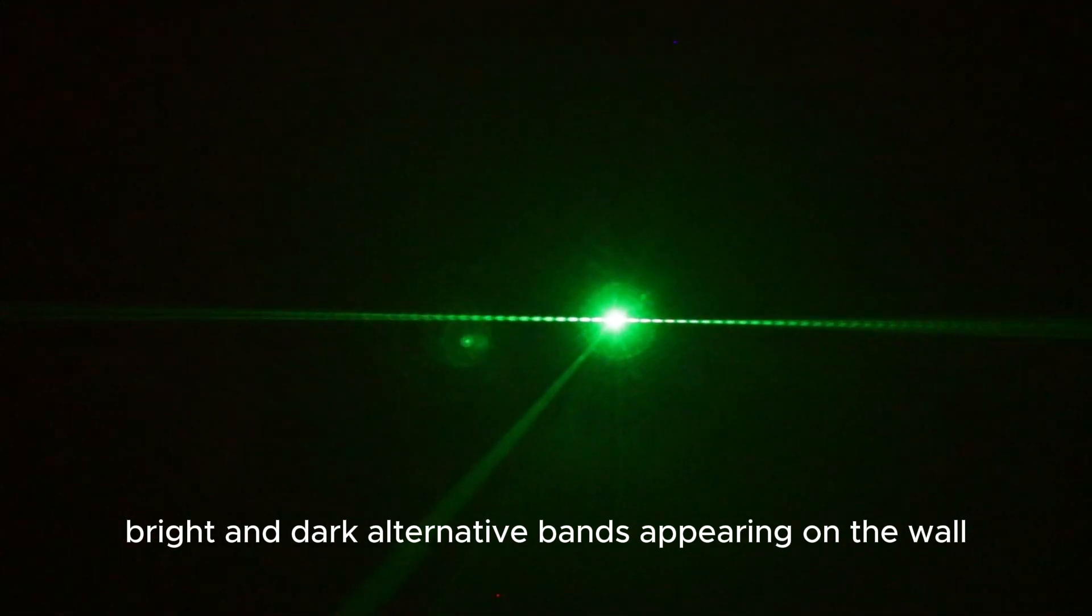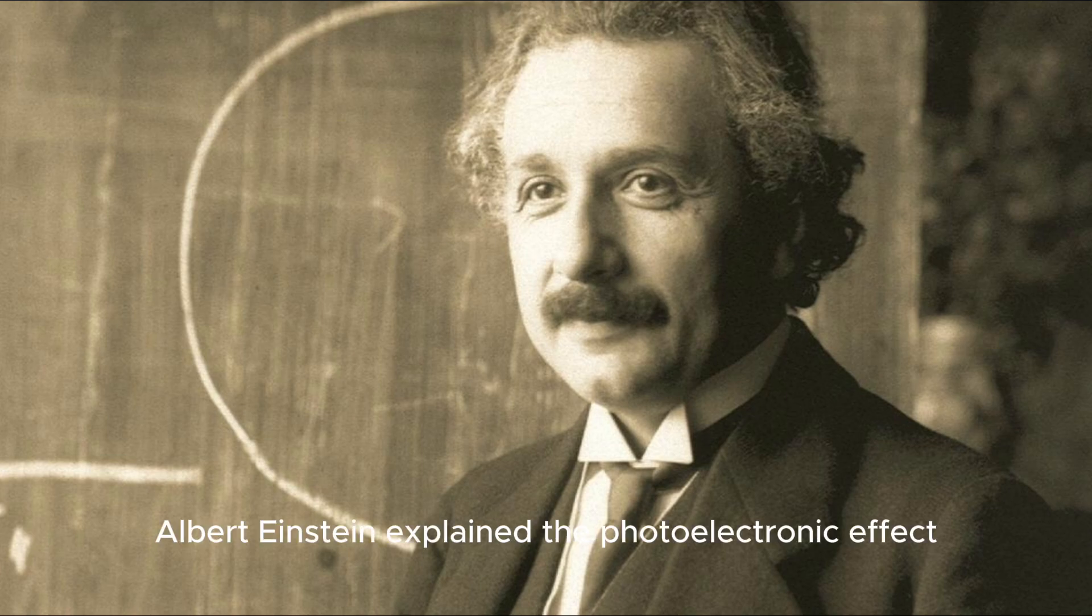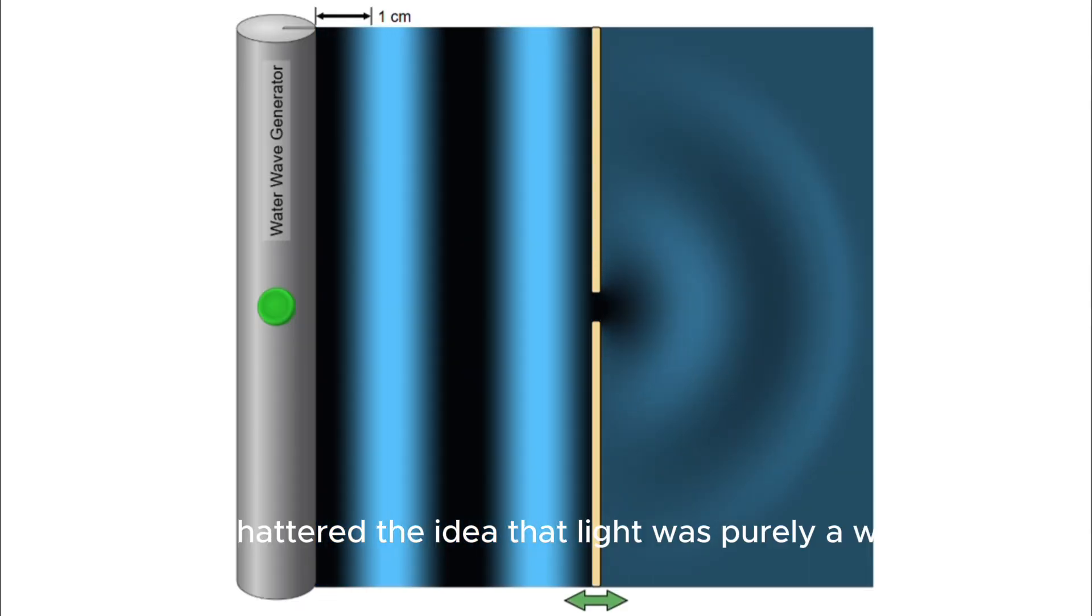But light wasn't done surprising us. In 1905, Albert Einstein explained the photoelectric effect, proving that light also acts as particles, like photons. This shattered the idea that light was purely a wave.